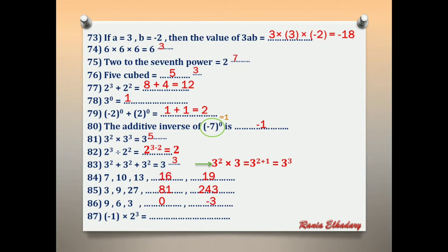Number 87: negative 1 × 2 power 3. First, 2 power 3 = 8. Then negative 1 × 8 = negative 8.